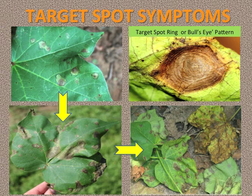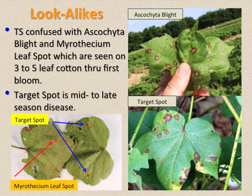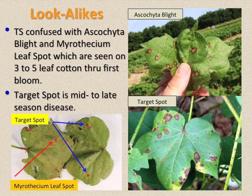Premature leaf shed usually begins in the first or second week of August. Several lookalike leaf spot diseases may be seen on seedling and young cotton. Ascochyta blight is commonly seen statewide during wet weather on three- to five-leaf seedlings through the first bloom, while target spot is a mid- to late-summer disease in cotton. Myrothecium leaf spot, which is seen on young cotton in Baldwin County, is much less common than either of the above diseases.